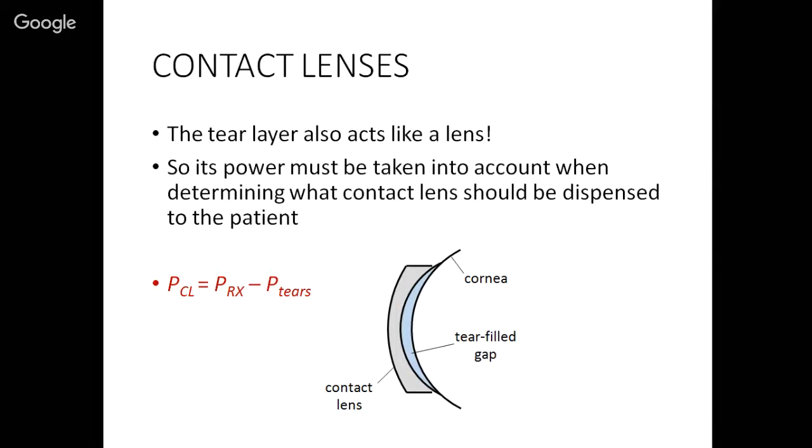Now what's interesting about this is that the tear layer also acts like a lens. So if you're going to put a contact lens on whose back surface doesn't match the cornea, you get that tear-filled gap. Then you also have to take the power of the tears into account when you're trying to figure out what contact lens to give to the patient. So you take the amount of power they need, and then you subtract off the power of the resulting tear layer. That gives you the contact lens that the patient's going to need. And in general, under these conditions, it'll be different than their RX.